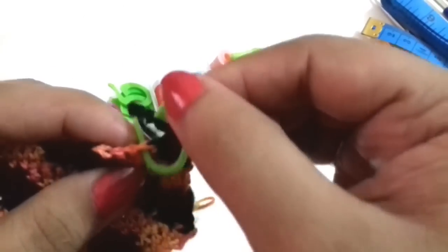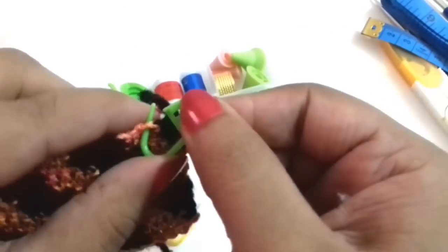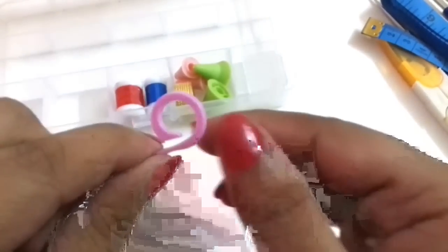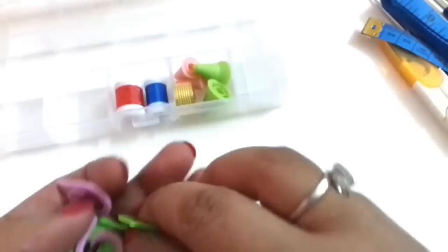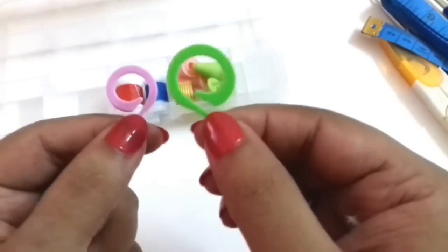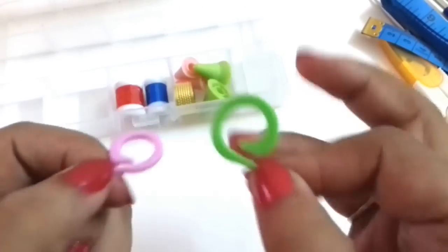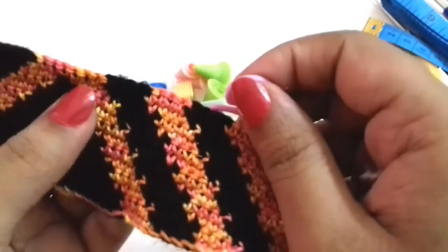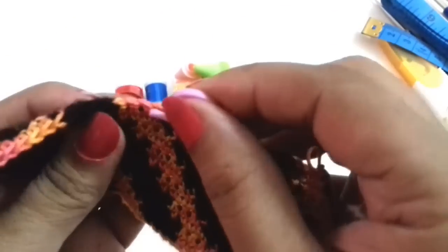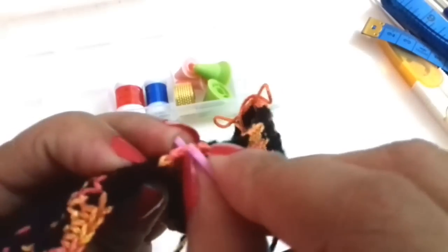I think these are also stitch markers. These are question mark shape stitch markers which are in two sizes, one is small and one is big. There are 5 small and 5 big, total 10 stitch markers. You can easily mark any stitch this way. If you have to mark this stitch you can simply insert it this way.